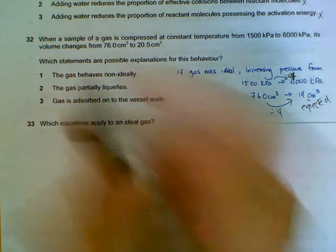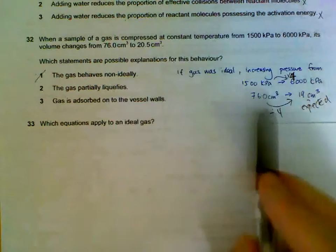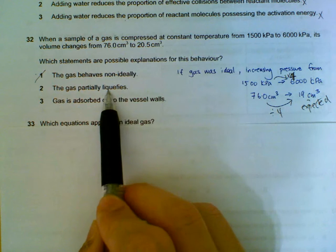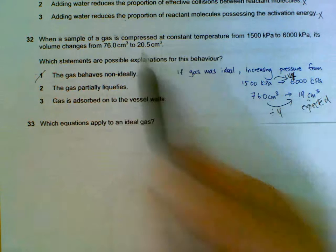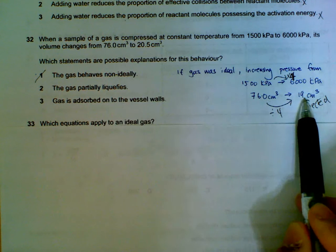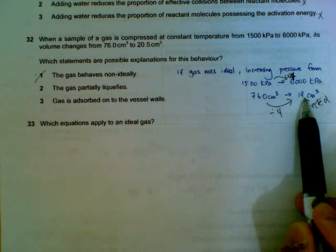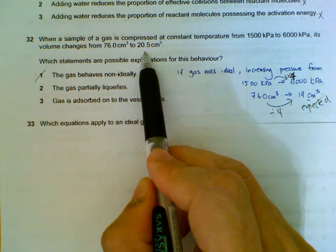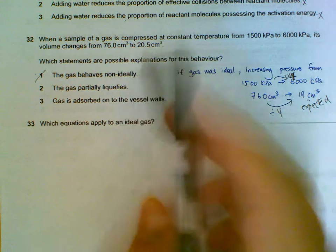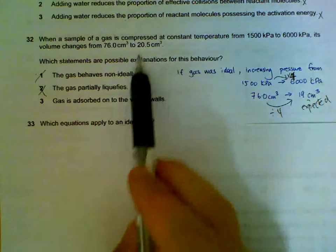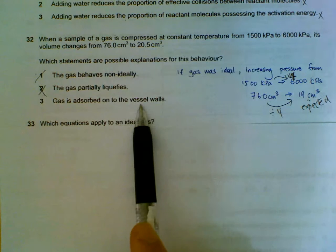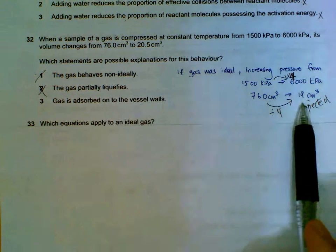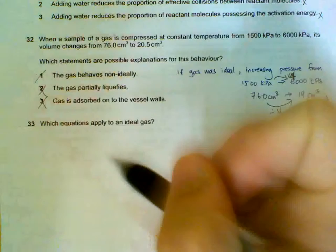Number one, it behaves non-ideally, because if it was ideal it will follow the ideal proportion. Number two, it liquefies. If it actually liquefies, we will get lesser than 19. We expect 19, and if part of it liquefies we get less than 19, maybe 18, 15, and all that. But actually we got more than what we expected. So it can't be that the gas partially liquefies, because we got more than what we expected. Same thing, because we got more than what we expected, we can't assume that the gas is adsorbed. If the gas was adsorbed, we would get less than what we expected. So only one is correct.